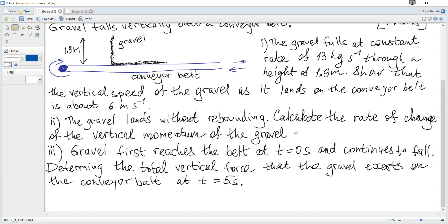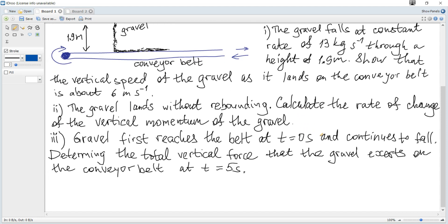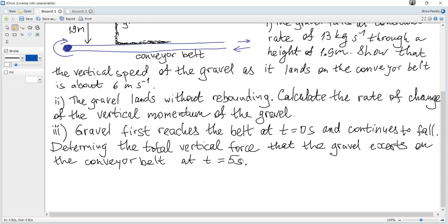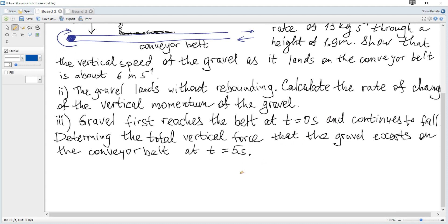The gravel lands without rebounding. Calculate the rate of change of the vertical momentum of the gravel. Momentum is a product of mass and velocity. Change in momentum is final momentum minus initial momentum. Final momentum is zero because final speed is zero. It stops. To find the rate of change, you need change in momentum during some time period divided by that time period. Finally, you get change in momentum per unit time, per one second. Let's choose time to be equal to one second.